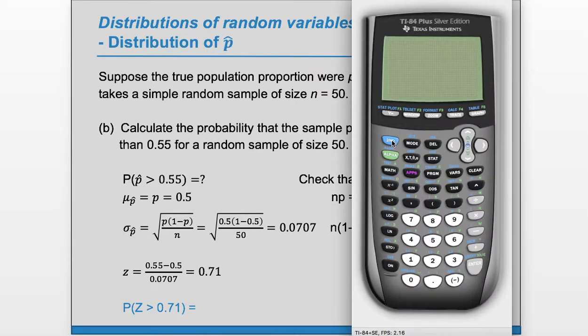Using whichever technology you prefer, here we'll use a TI, so we'll go to second vars, which is distribution. Choose number 2, normal CDF. Our lower bound is 0.71. Our upper bound is some big number, so we'll just do 6. And we'll hit enter, enter, and we get 0.24.